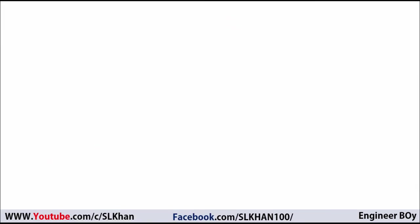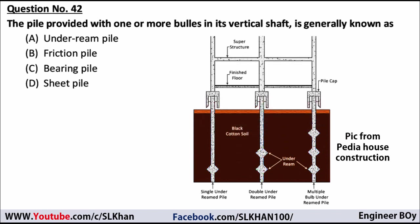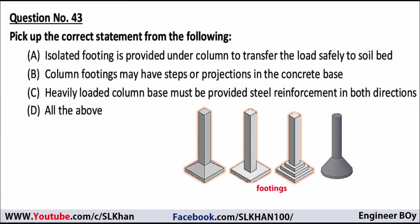Question 42: a pile provided with one or more bulges in its vertical shaft is known as an under-ram pile. The name itself indicates the feature. Friction piles have a rough surface; bearing piles are driven to rock strata; sheet piles are steel sheets. So under-ram pile is the correct option for question 42.